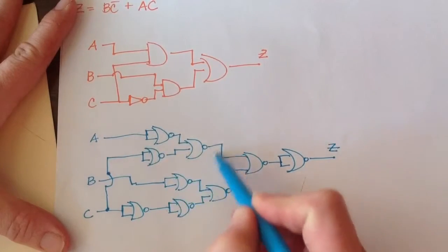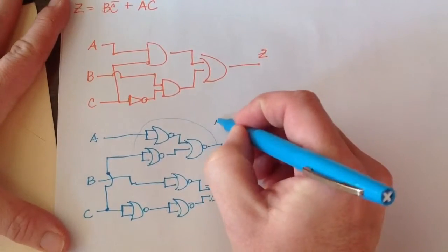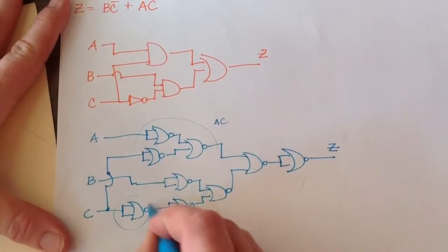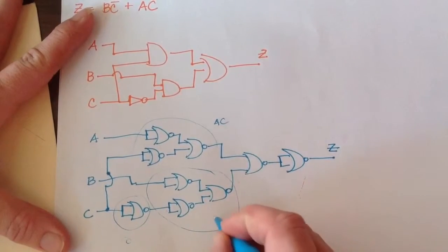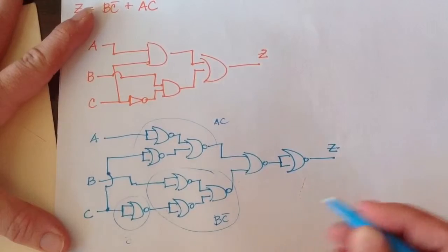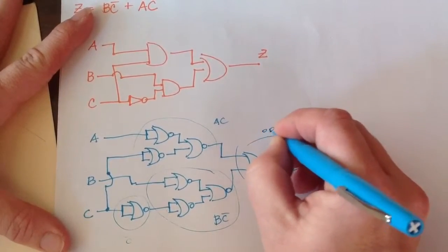So this piece is A and C. This piece is NOT C. This piece is B and NOT C. And this piece is our OR gate.